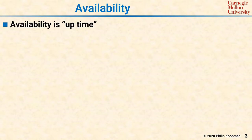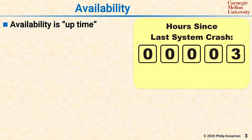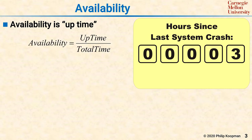Availability is about uptime. When we think of availability, we often think about how long a system has been up since the last crash. But that's only part of the story, because you also need to take into account how long the outage lasts. Availability is defined as the amount of uptime divided by the total time, so availability is a number such as 99.1% uptime.